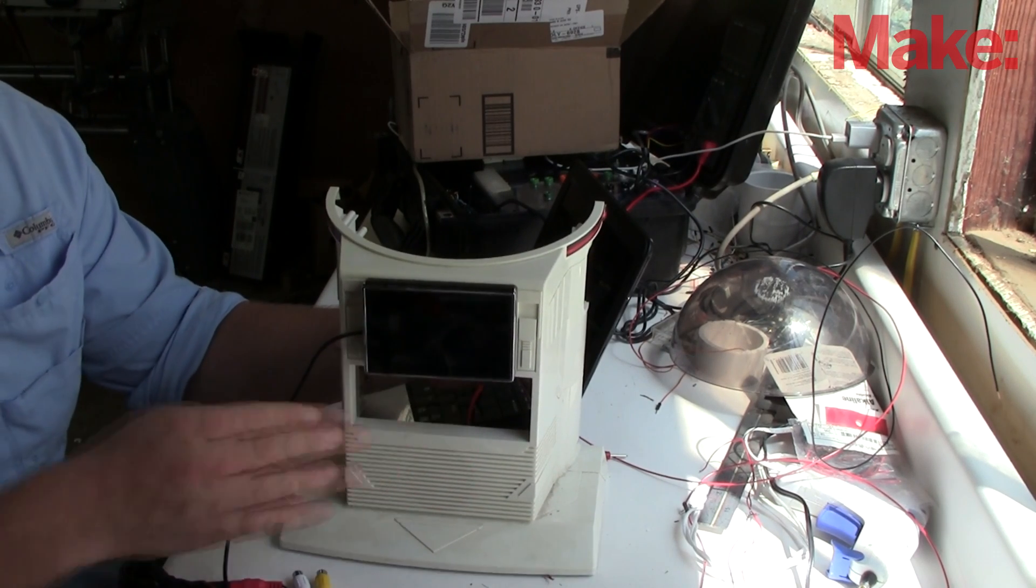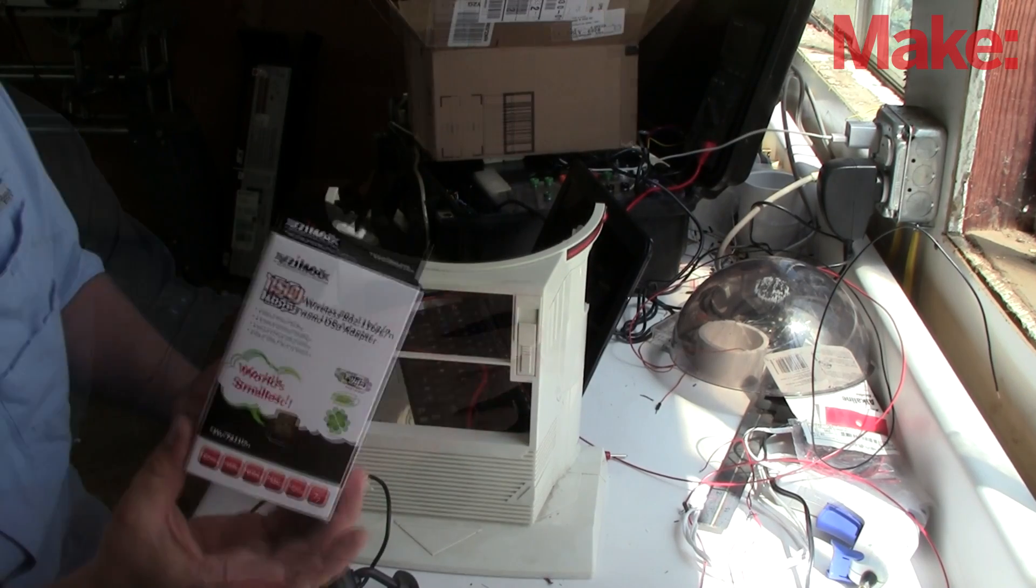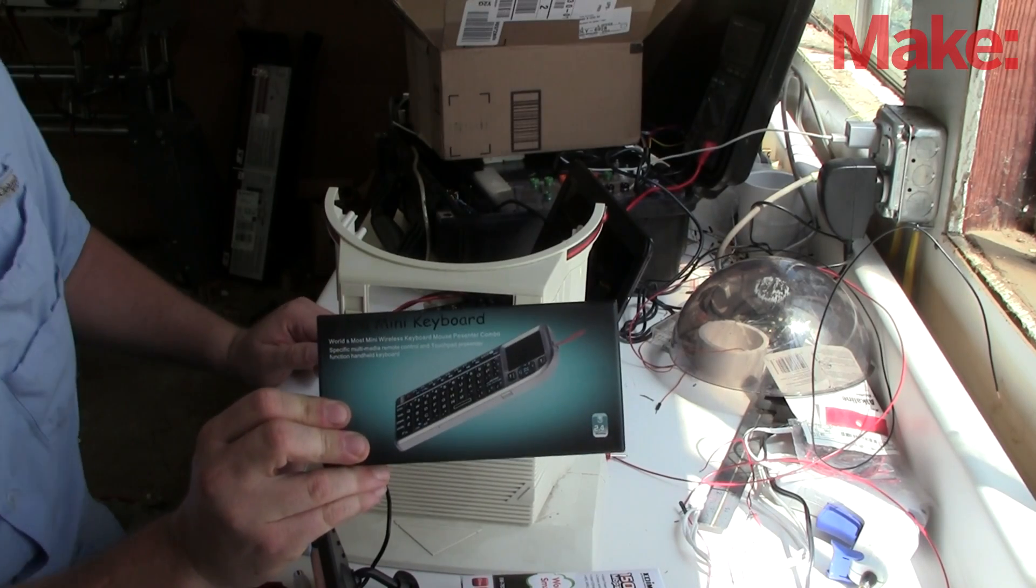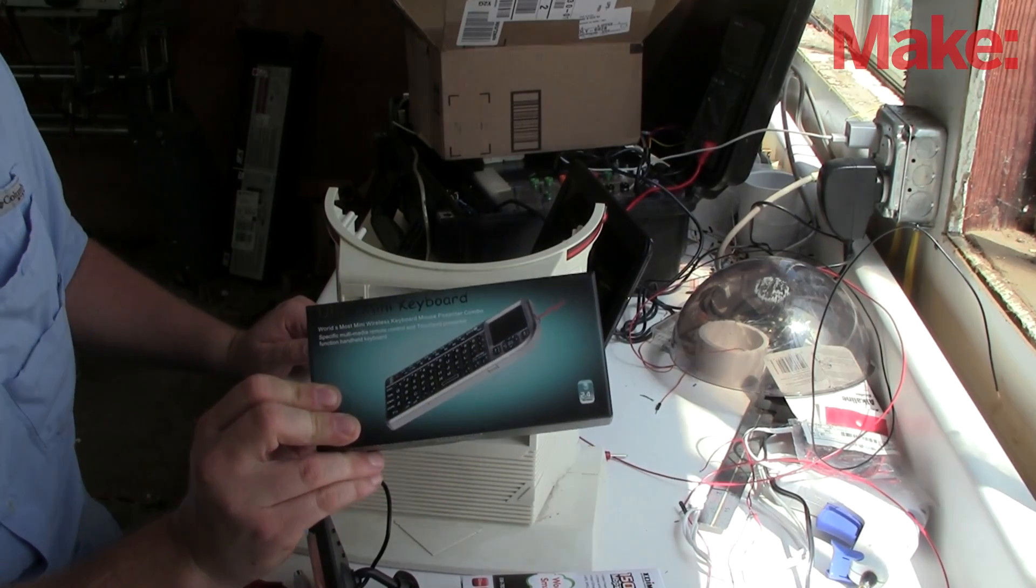As far as this goes down here, I can just put a metal plate over it or a plastic plate. Included with this project, I'm going to use a wireless adapter and a wireless keyboard so I can talk directly to the Raspberry Pi.